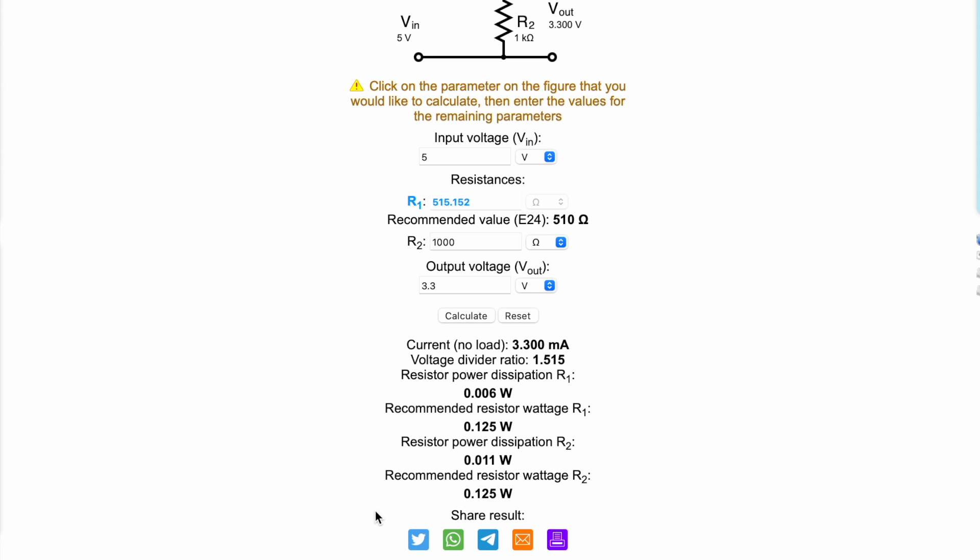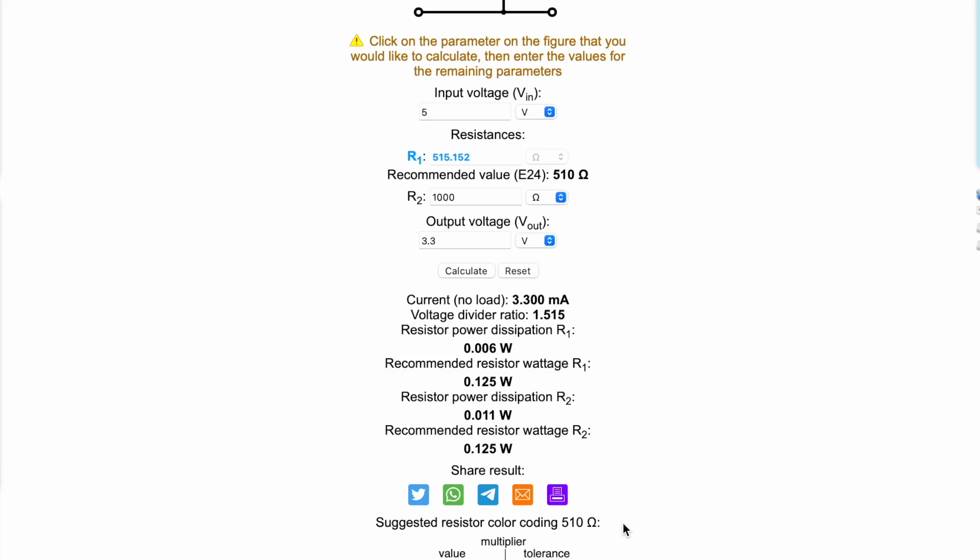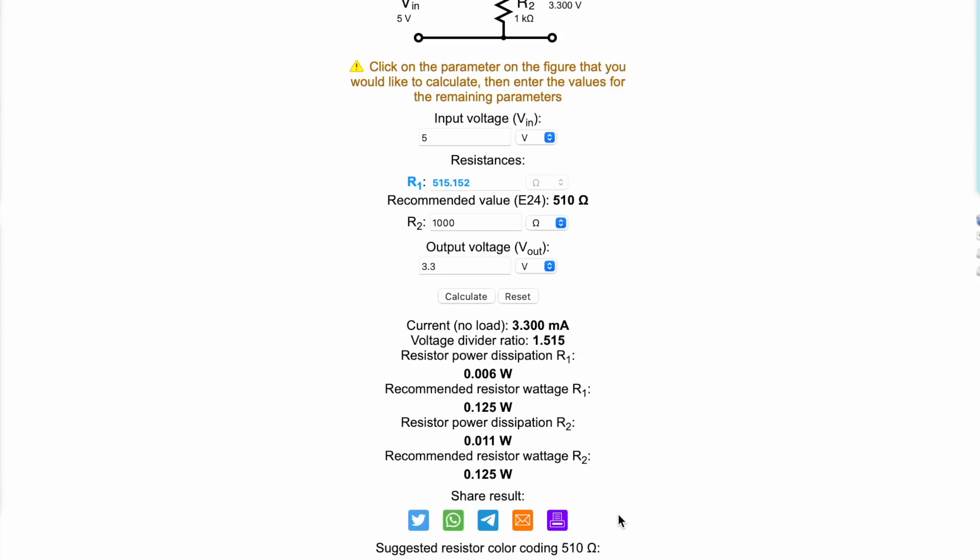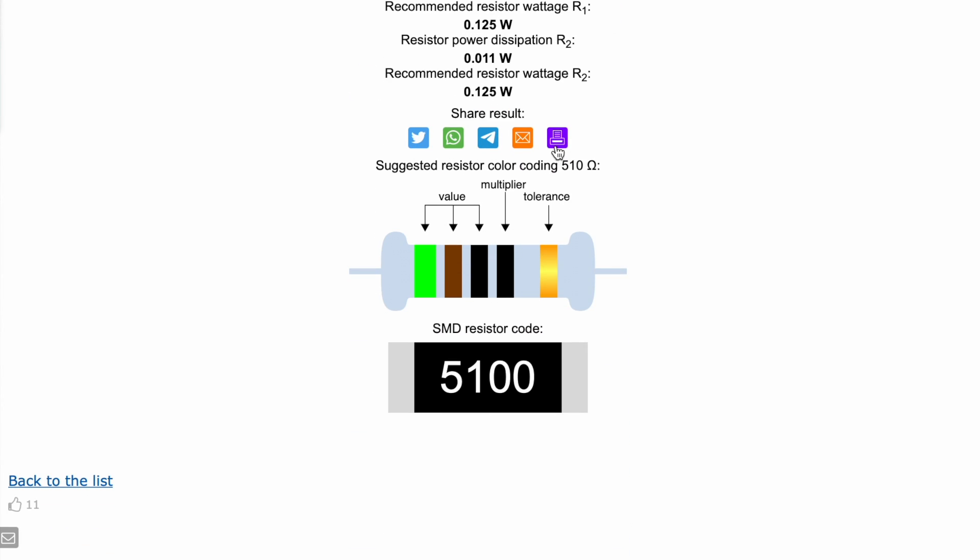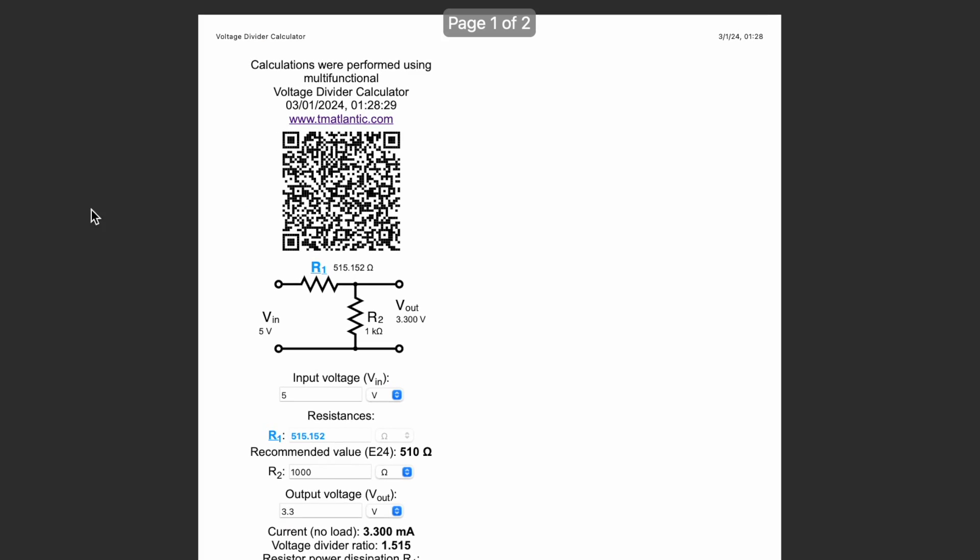As the result of the calculation, the recommended minimum power values when choosing resistors and their color as well as the SMD code for parts ordering or installation are indicated. The result can be shared with your colleagues or printed as a report.